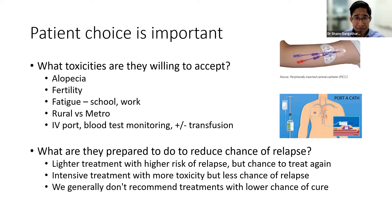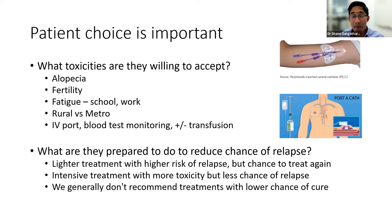We generally don't recommend treatments with a lower chance of cure. If someone has advanced disease needing six months of therapy, we'll still recommend that. Some patients don't want any treatment or want to wait — we have big discussions about that. While it is up to patient choice, patients need to be aware of the risks and outcomes in that decision-making.